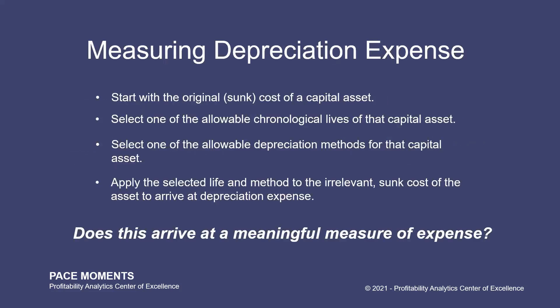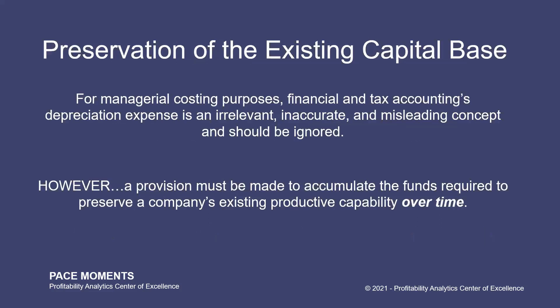Now, let's look at the way that financial and tax accounting determines depreciation expense. First, they start with the original, sunk, irrelevant costs of a capital asset. Then go to column A and select one of the allowable chronological lives of that capital asset. Then move over to column B and select one of the allowable depreciation methods for that capital asset. Apply the selected life and the method to the irrelevant sunk cost of the asset to arrive at depreciation expense. Does this seem like it would arrive at a meaningful measure of expense? There are too many variables, too many choices, and it's all being driven by an irrelevant cost to begin with. So for managerial costing purposes, financial and tax accounting's depreciation expense is an irrelevant, inaccurate, and misleading concept and should be ignored.